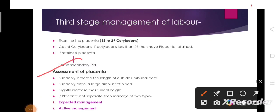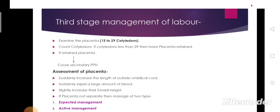Signs of placenta separation include: a sudden increase in the length of the outside umbilical cord, a sudden expulsion of a large amount of blood, and a slight increase in fundal height. If the placenta is not separated, it can be managed in two ways: expectant management and active management.